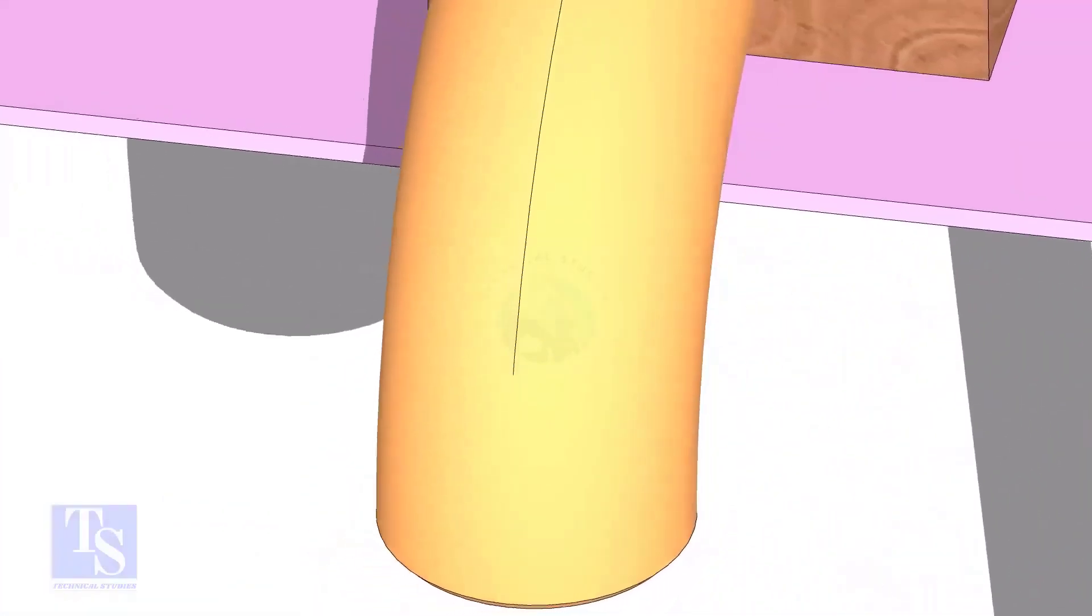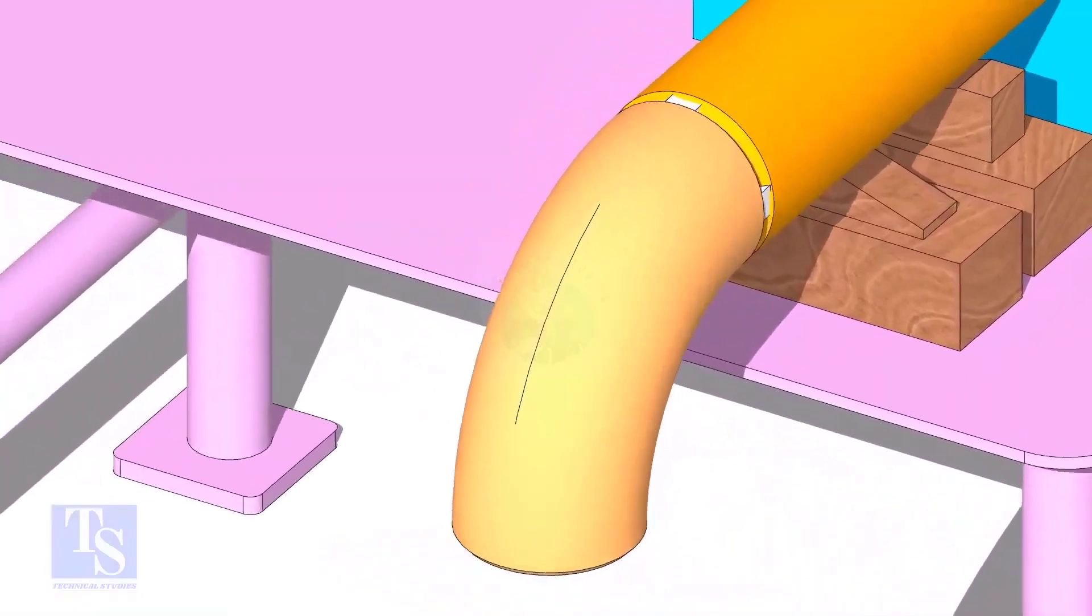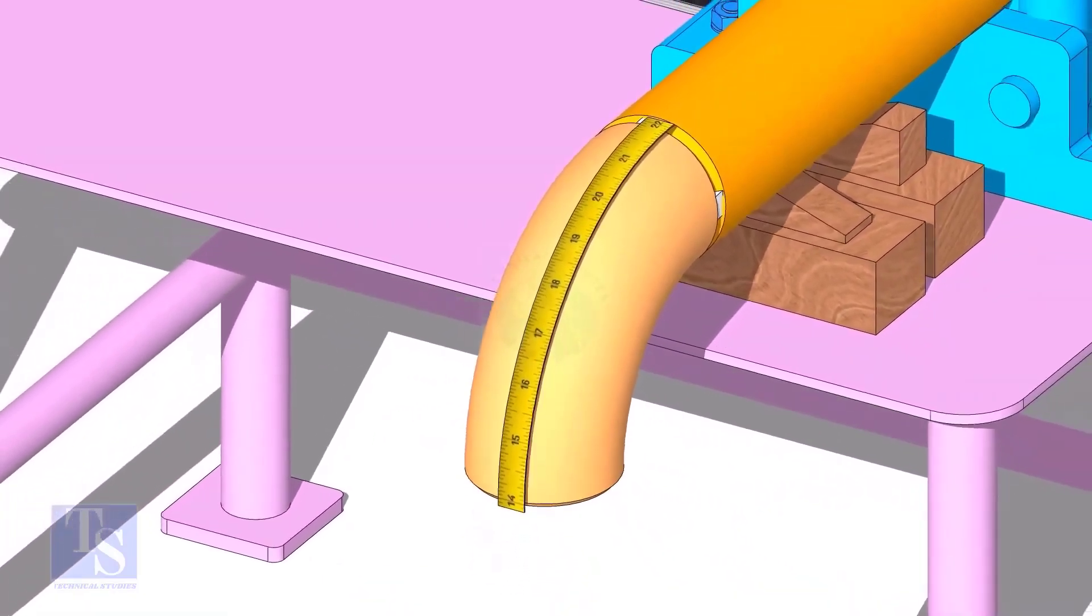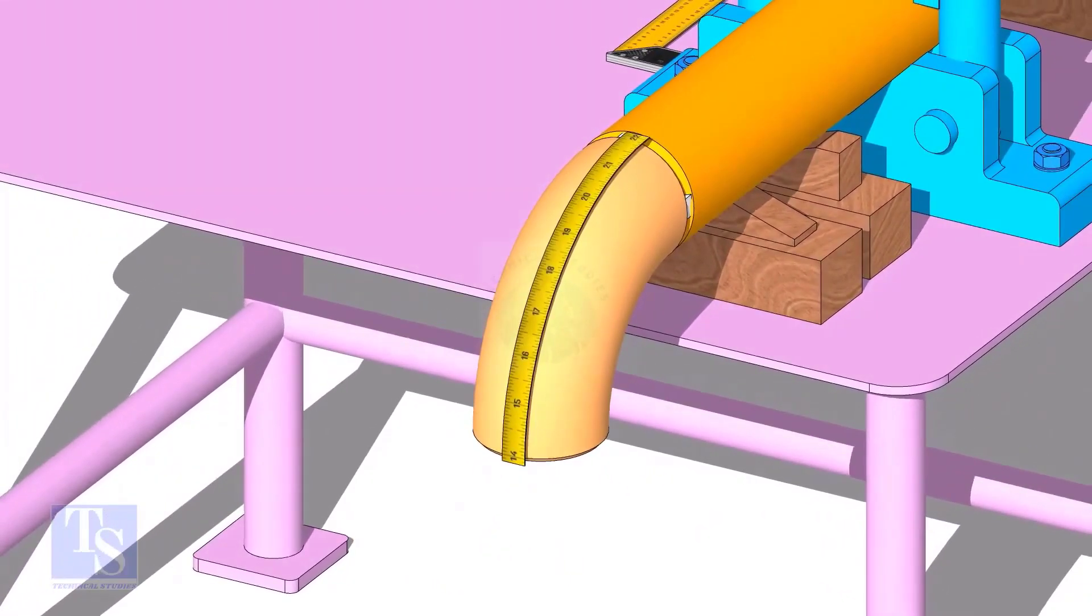Draw a line connecting these marks. Measure the outer circumference of the elbow and mark the half circumference on the center line, as shown.